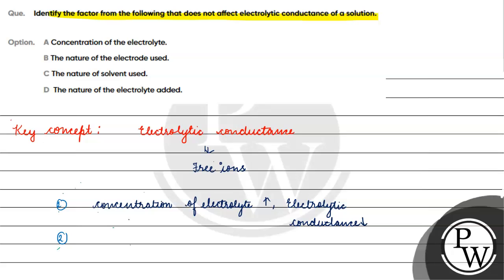The nature of the solvent also affects electrolytic conductance. If the dielectric constant of the solvent is higher, we get more free ions. More free ions means electrolytic conductance will also be higher. So the greater the dielectric constant, the greater the electrolytic conductance.